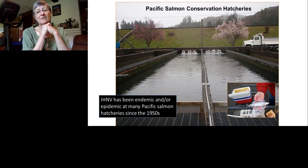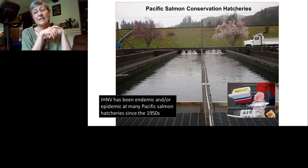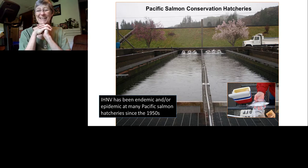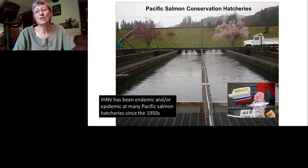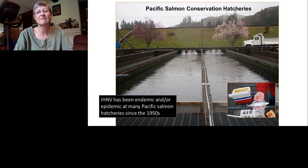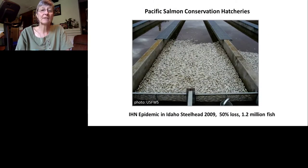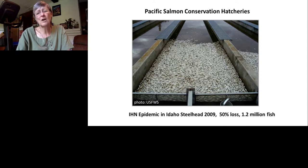Closest to my heart are Pacific salmon conservation hatcheries, which rear many different species of Pacific salmon — including the three main IHNV hosts — for release into the wild to supplement declining wild populations. There are literally hundreds of hatcheries from California to Alaska. IHN was first detected there in the 1950s. A 2009 epidemic in steelhead resulted in over one million fish lost — 50% of production for that hatchery in that year. This is a major pathogen.